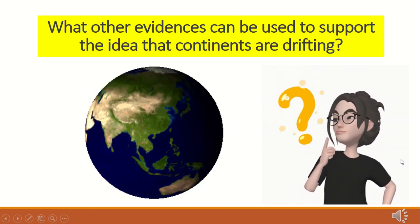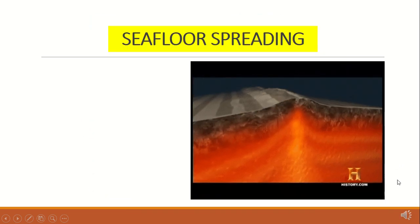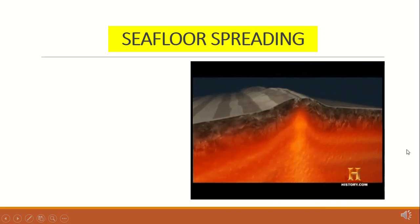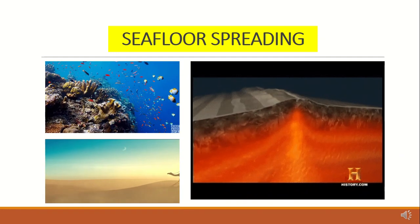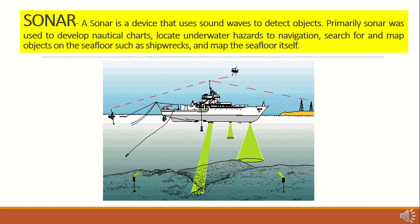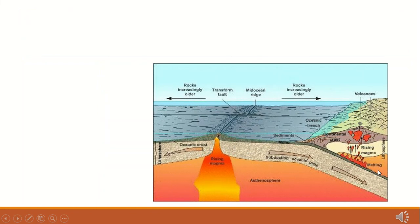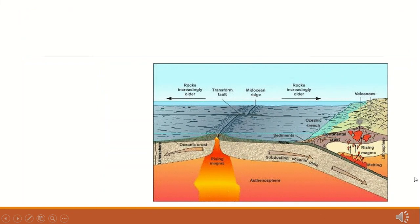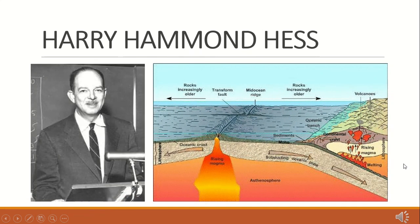What other evidences can be used to support the idea that continents are drifting? Let's find out in today's lesson. Many people in the past believed that the ocean floor is flat like the desert. But in the 1930s, sounding gear called sonar was developed, leading to the discovery of the standing features of the ocean floor. One of the scientists to use sonar to study the ocean floor during World War II was Harry Hammond Hess, a professor of geology at Princeton University.